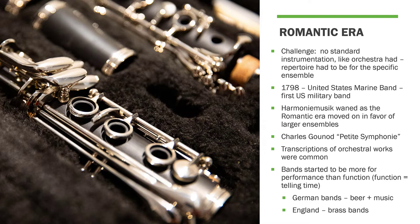A couple other things happened in the romantic era. In 1798, the U.S. Marine Band, which was the first U.S. military band, was started. We saw harmony music start to wane in the romantic era because it favored large ensembles. But there's a really cool piece — Charles Gounod's Petite Symphony — probably one of my favorite pieces with this type of instrumentation. It is for pairs of oboes, pairs of clarinets, pairs of bassoons, pairs of horns, and one flute.